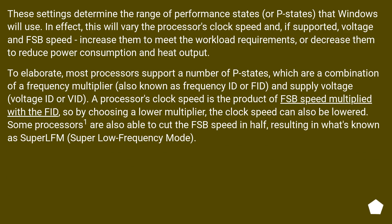These settings determine the range of performance states, or P states, that Windows will use. In effect, this will vary the processor's clock speed and, if supported, voltage and FSB speed — increasing them to meet the workload requirements, or decreasing them to reduce power consumption and heat output.